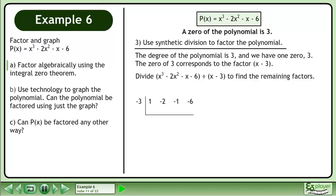Set up the synthetic division. Complete the synthetic division. The quotient is x² + x + 2, the divisor is (x - 3), and the remainder is 0.